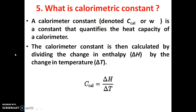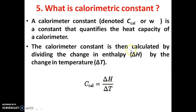Fifth question: What is the calorimetric constant? The calorimetric constant, denoted as C_cal or W, quantifies the heat capacity of a calorimeter. It is the ratio of the change in enthalpy (ΔH) to the change in temperature (ΔT). So calorimetric constant = ΔH / ΔT.